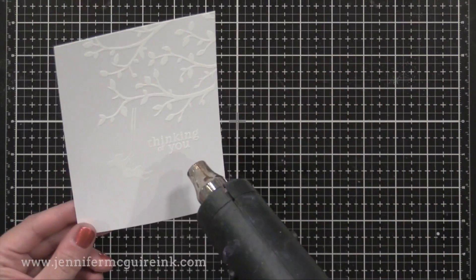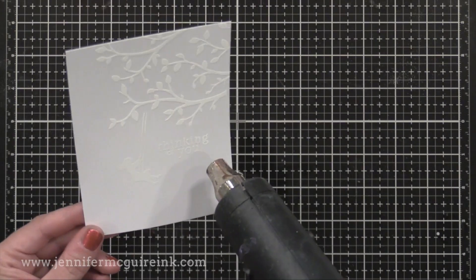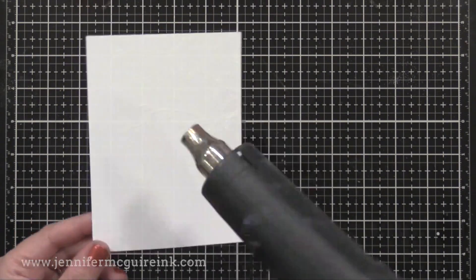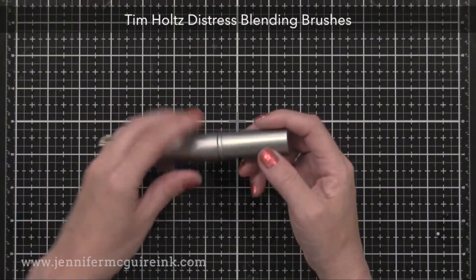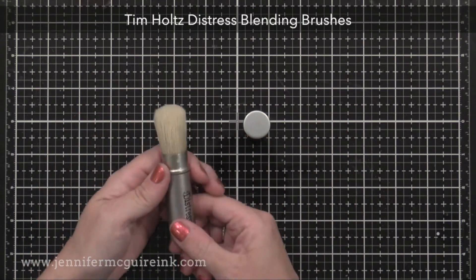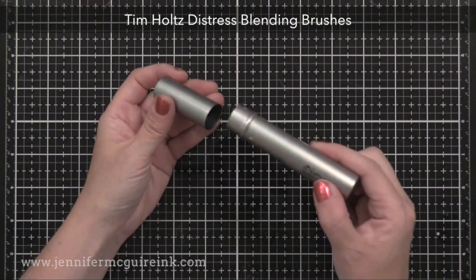After I added the white embossing powder, I'll heat set this. Now remember, you can apply different types of color over this. This time I wanted a softer look, so I'm using these Tim Holtz Distress Blending Brushes, and I am really excited about these brushes.